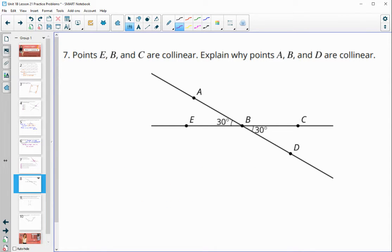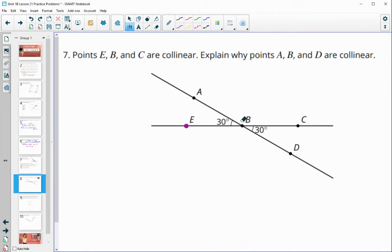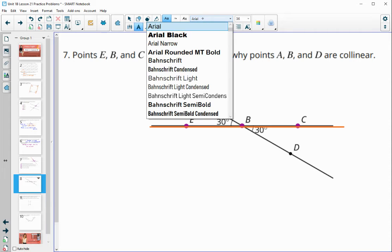Number seven, E, B, and C are collinear. So they're telling us that these are certainly collinear. They are on a straight line. Explain why points A, B, and D are also collinear. So we can see that if we took this line, we could do a rotation. So let me write this out.